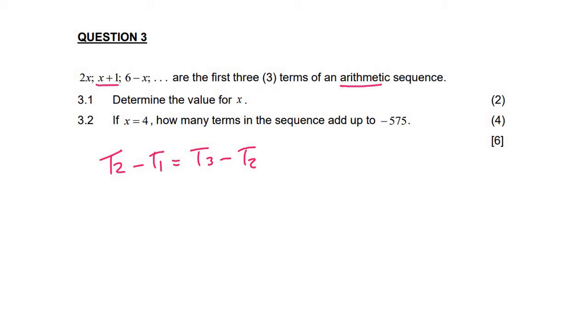So now we can just go forward. So term 2 is x plus 1, term 1 is 2x, term 3 is 6 minus x, and then term 2. I must put it in a bracket. Whenever you minus something that has more than one term, you must put it in a bracket like that.